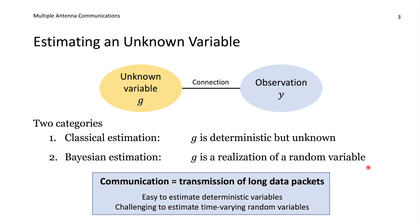In wireless communications, we are typically transmitting long data packets so we can utilize channel capacity as our performance metric. It is easy to estimate deterministic variables, as in classical estimation, because we can take a small part of our packet to send signals that allow us to make observations and estimate. When the packet grows large, the size we need to allocate to estimate this deterministic variable will be negligibly small. The challenge is to estimate realizations of random variables when those are varying with time. During transmission of a long block, we get new realizations over time, and for each realization we can only assign a small part of the packet to obtain observations. So in wireless communications, it is particularly Bayesian estimation that is of interest, and that is what I will be considering here.